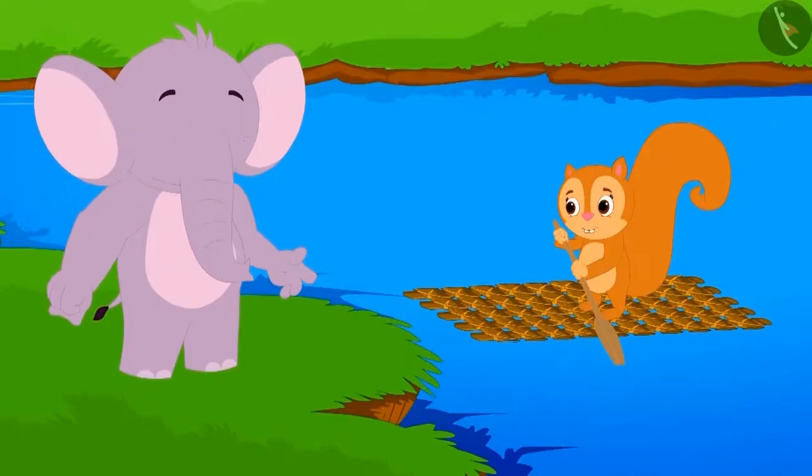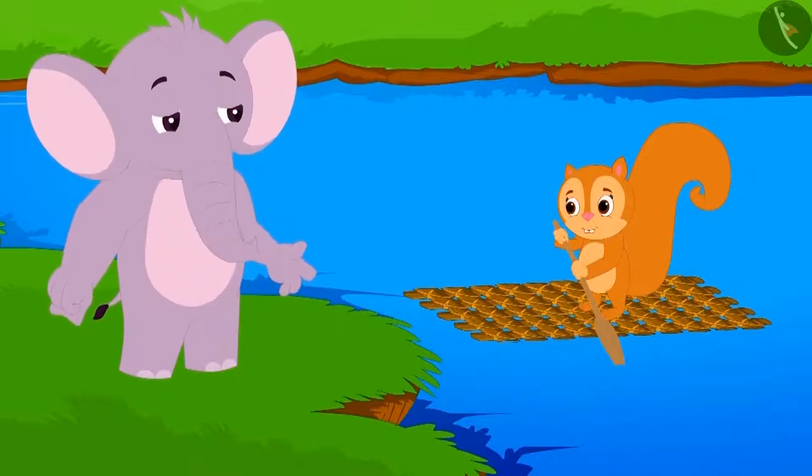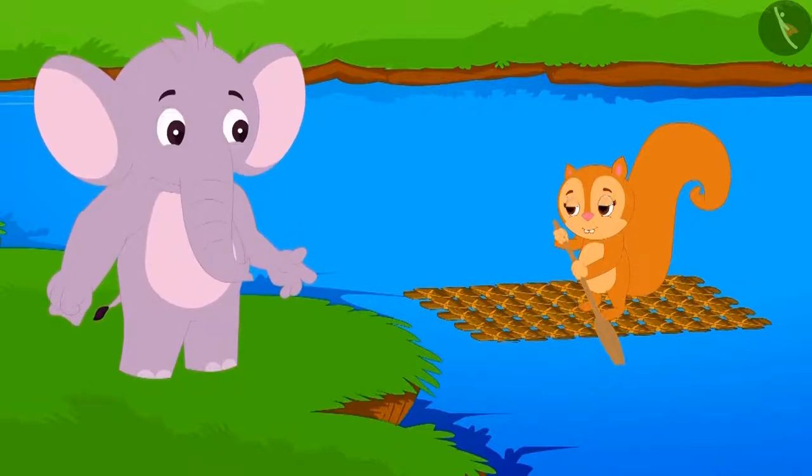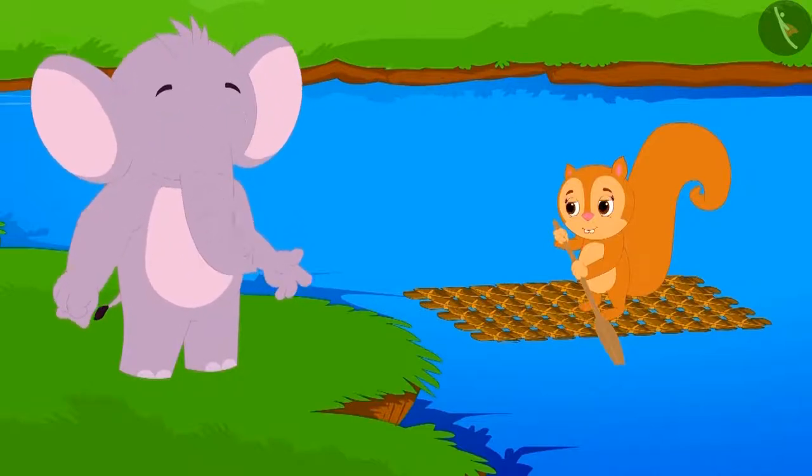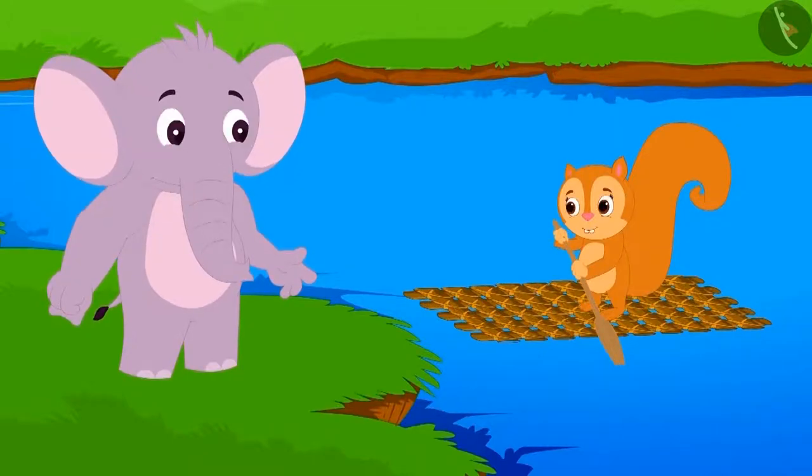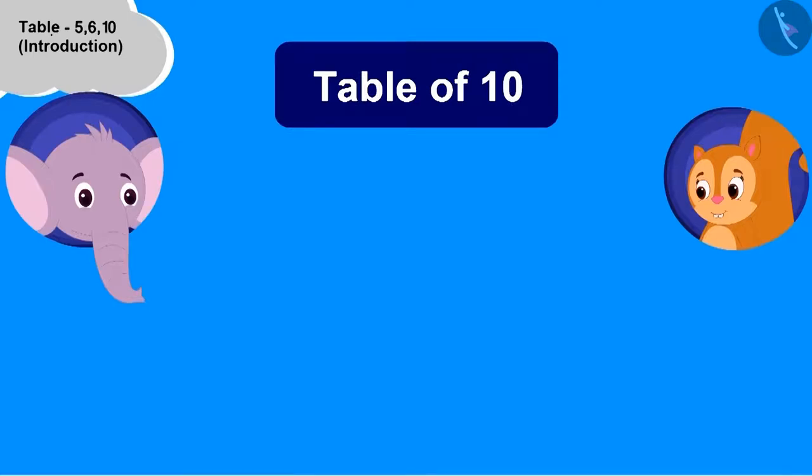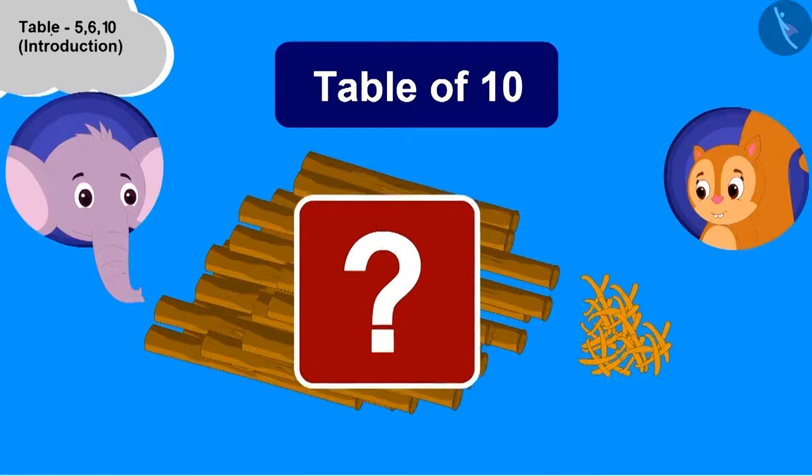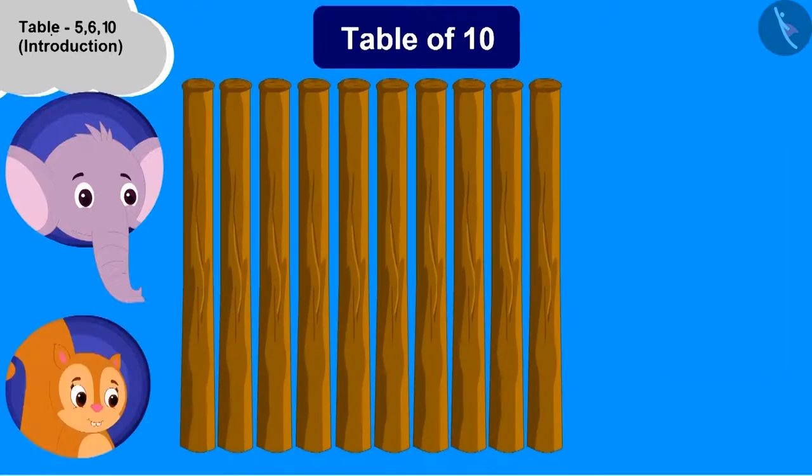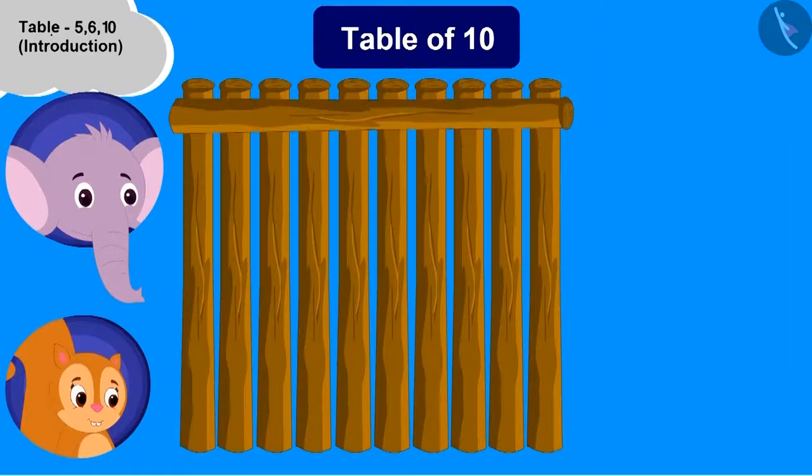Today, Appu saw her sailing in her boat on the river. He asked Chanda to teach him to make the boat and the table of 10. Children, to teach Appu the table of 10, how many sticks should Chanda use? 10. Now, what should we do to start building the boat and the table of 10? We have to place one wood horizontally.